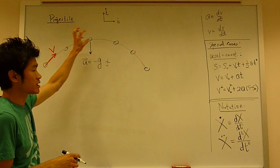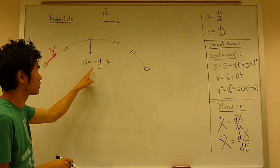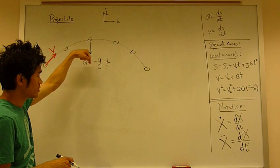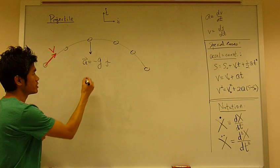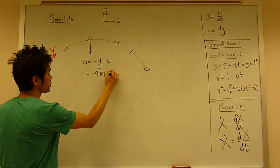The projectile is subject to one single acceleration downward, and it's exactly equal to g, which is 9.81 meters per second squared.